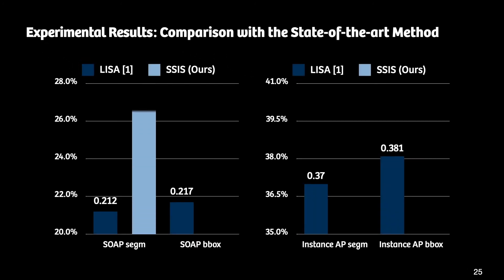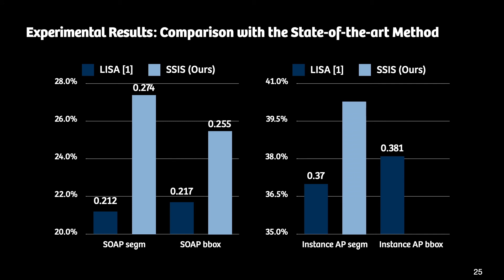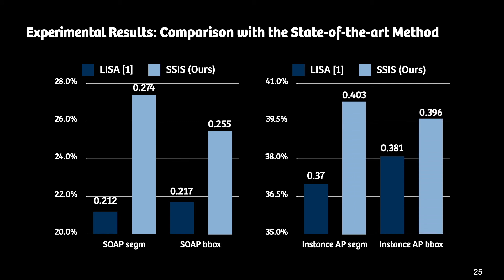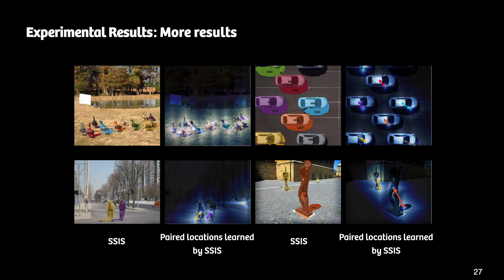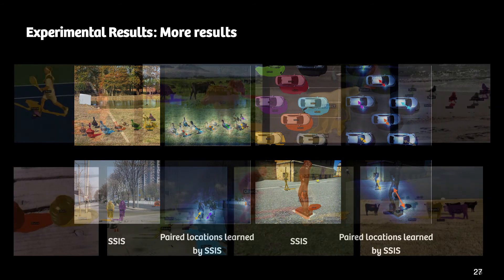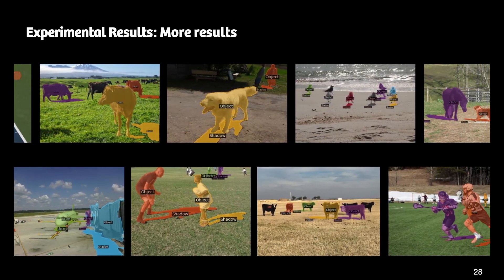Here we show the results. We compare our method with LISA, and our method outperforms LISA across all metrics by a large margin. We also show visual comparisons: our method can handle irregular shadow shapes and find the correct pair of shadow and object. The fourth column indicates that our method can learn the location of shadow-object pairs through our bidirectional relation learning module. We show additional results and pair locations learned by our method.